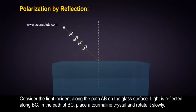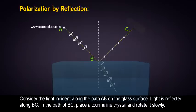Consider the light incident along the path AB on the glass surface. Light is reflected along BC. In the path of BC, place a tourmaline crystal and rotate it slowly.